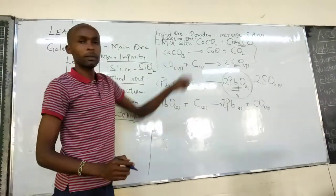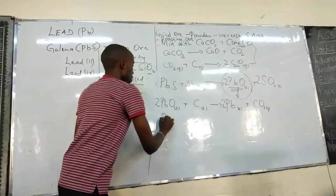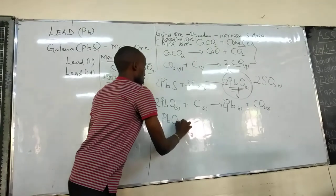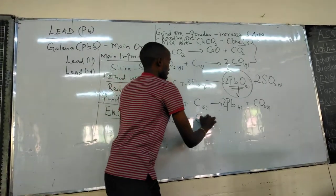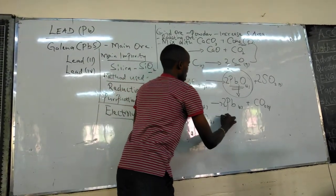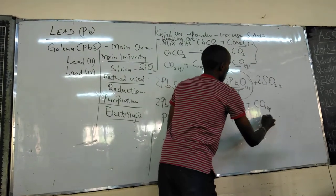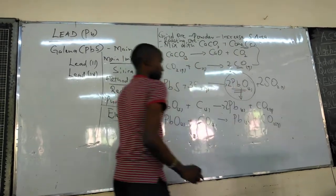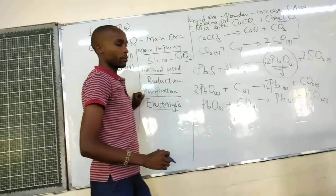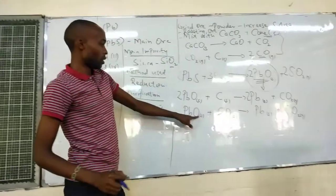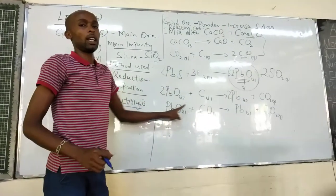If it is reduced by carbon(II) oxide, we have lead oxide, carbon(II) oxide, we form lead and carbon(IV) oxide. And this one, it is balanced when it is like this.